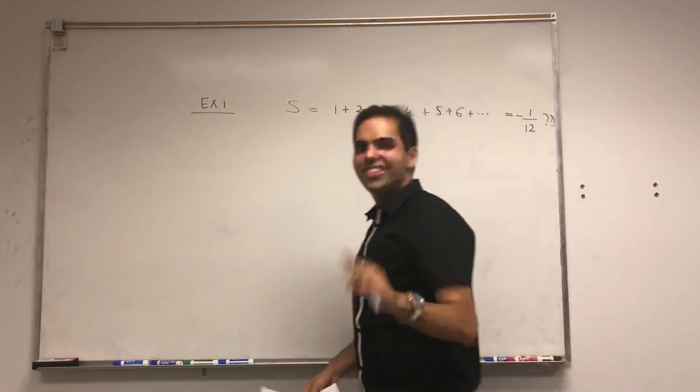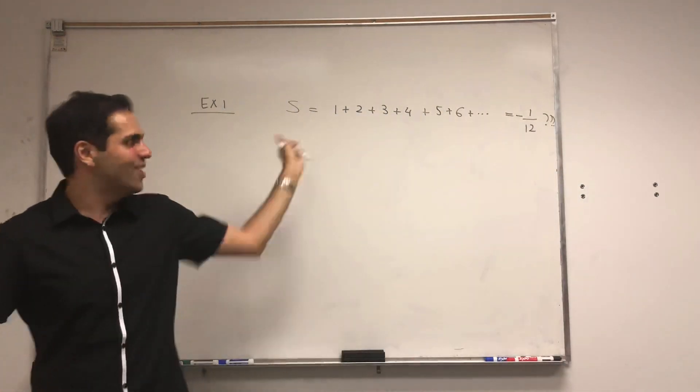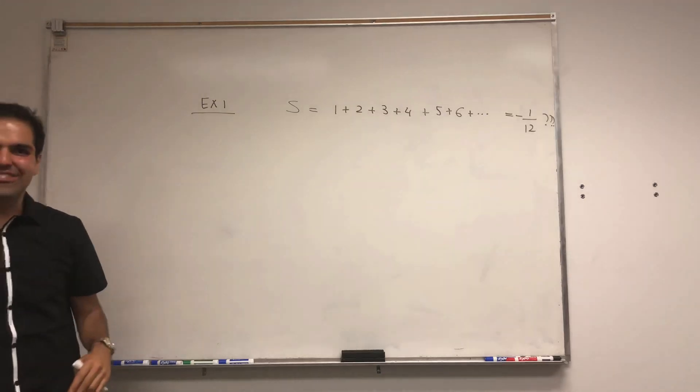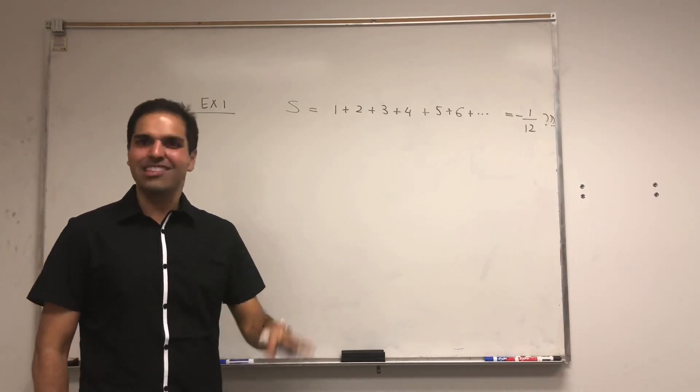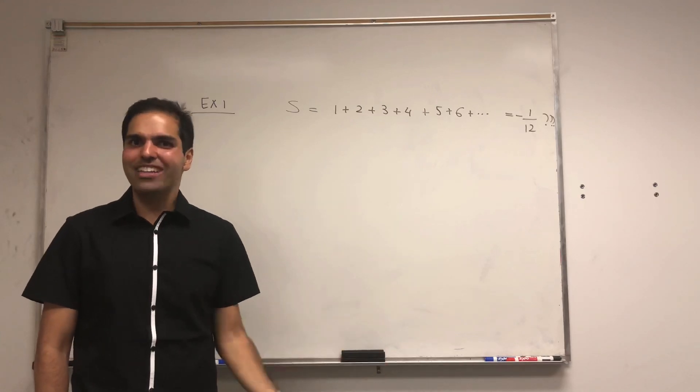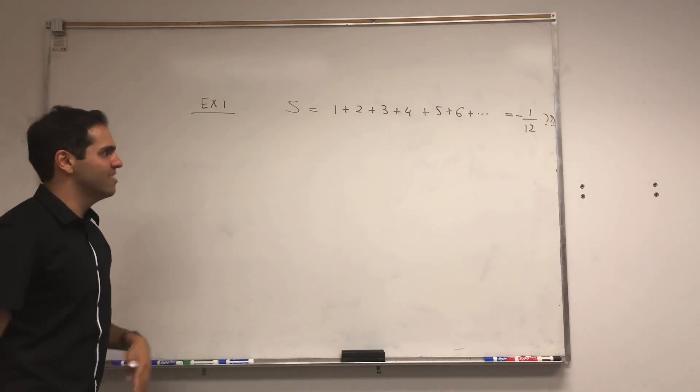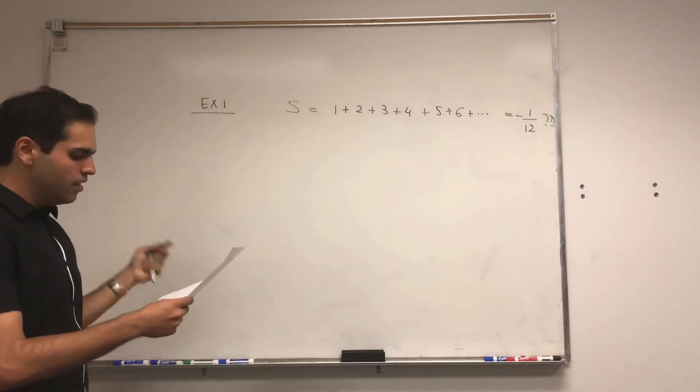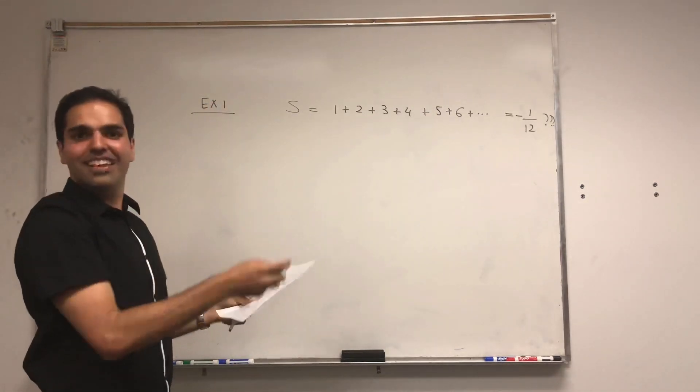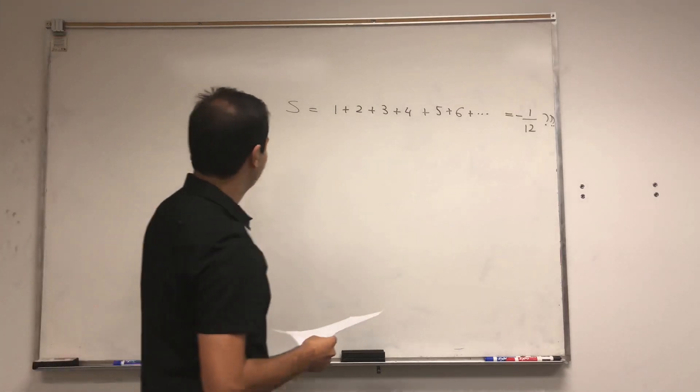And I'm sure you've seen those memes of sums of integers as minus 1 over 12, and I'm sure some of you were laughing about this, but not understanding at all where it came from. Well, I'm here to remedy this. Let me show you where this comes from. It's just from naive manipulation of series.